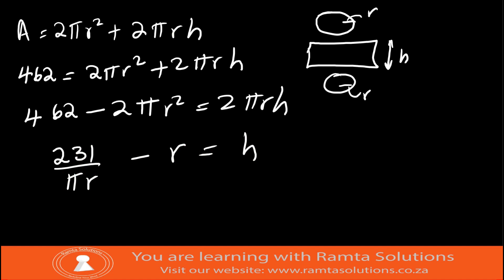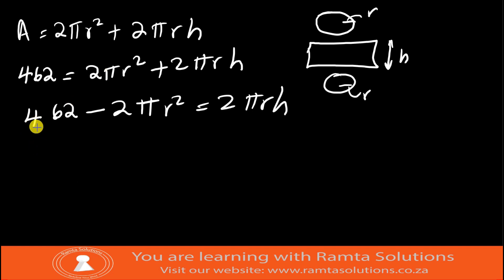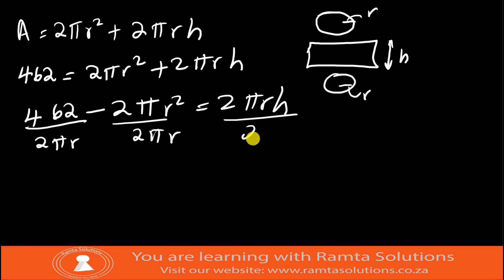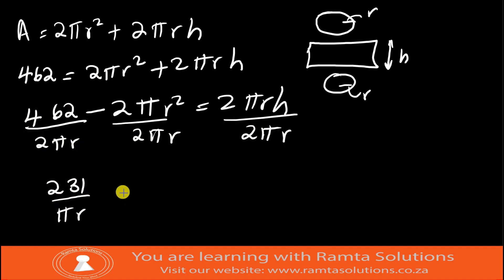Dividing through by 2πr: 462/(2πr) − 2πr²/(2πr) = h, which simplifies to h = 231/(πr) − r. So we have found h in terms of r and pi.